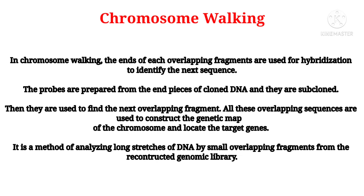In chromosome walking, the ends of each overlapping fragment are used for hybridization to identify the next sequence. As you all know, many eukaryotic genes and gene clusters span enormous strands of DNA — some consist of more than 1000 KB.